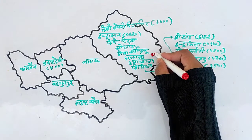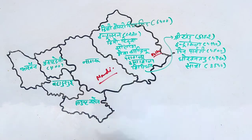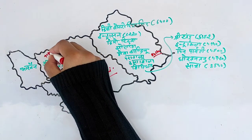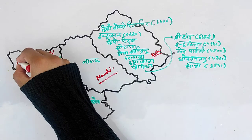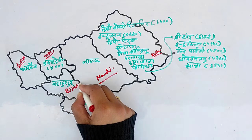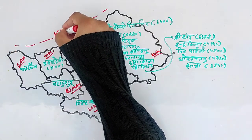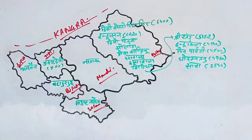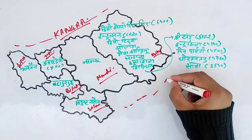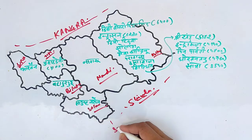This is Kullu. This is Mandi — Kullu and Mandi are the central districts. This is Hamirpur, this is Una, this is Bilaspur, and this is Solan. This area is Kangra. This area is Shimla. And this is Sirmour. I am doing this area first. Let's start.